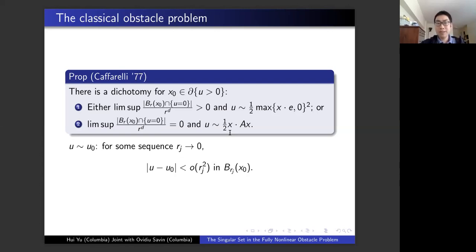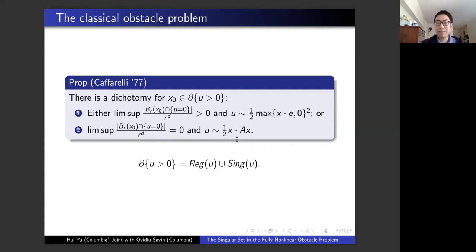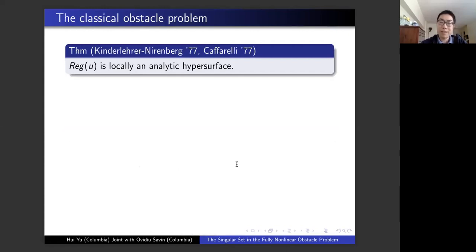This allows you to decompose the free boundary into two pieces: the regular part and the singular part. A free boundary point is in the regular set if it has real contact and looks like a half-space solution. A point is in the singular set if there is only tangential contact and the solution is well approximated by a parabola solution. Caffarelli showed that the regular piece is locally analytic — it's really the best you can hope for.